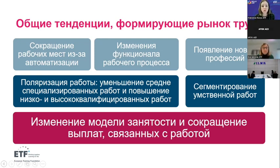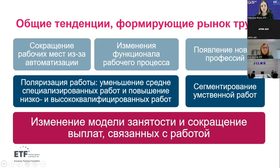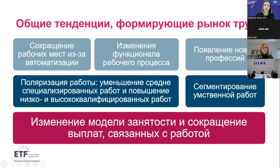The third trend refers to job polarization — the declining share of medium-skills jobs as opposed to an increasing share of high and lower-skills jobs. This is due both to automation affecting routine jobs in the middle of the skills distribution, and to the offshoring of medium-skills manufacturing jobs because of globalization in developing economies. In Europe, for instance, projections show that more or less four in five new job openings will relate to high-skills occupations, so there is really an increase of these higher-end occupations in the market.